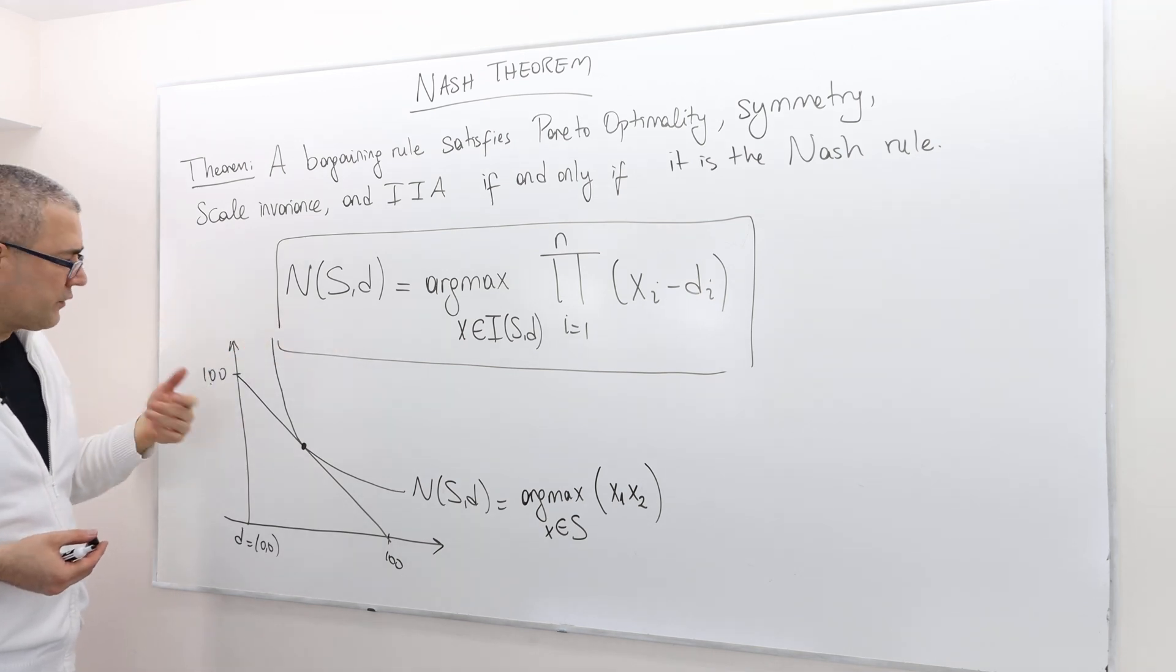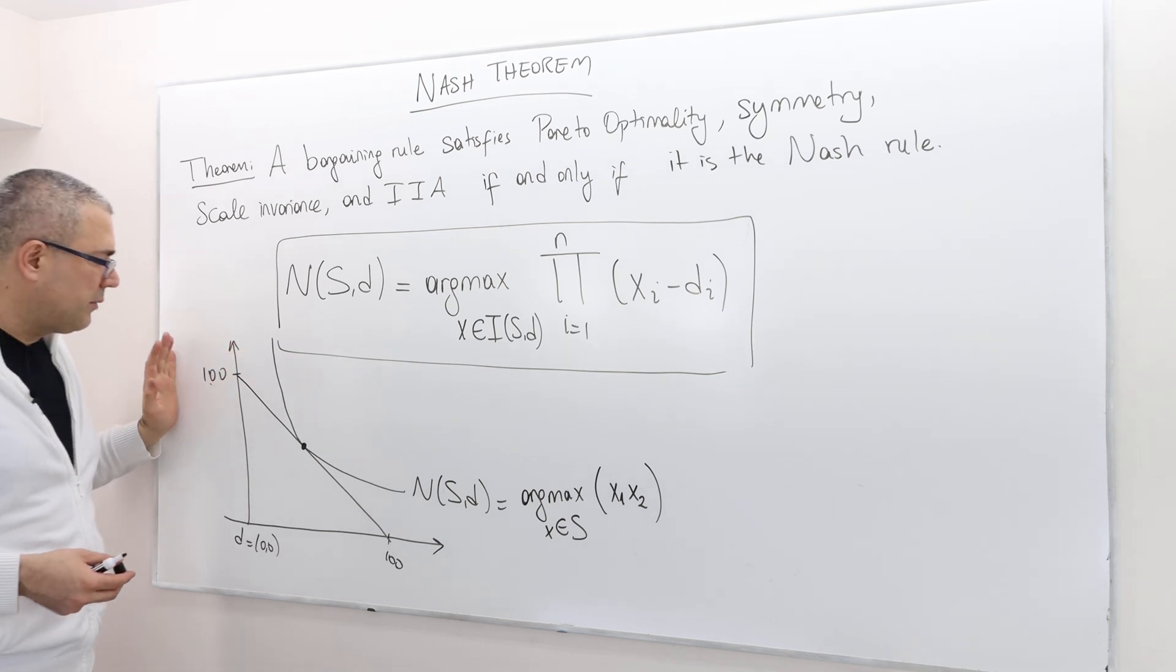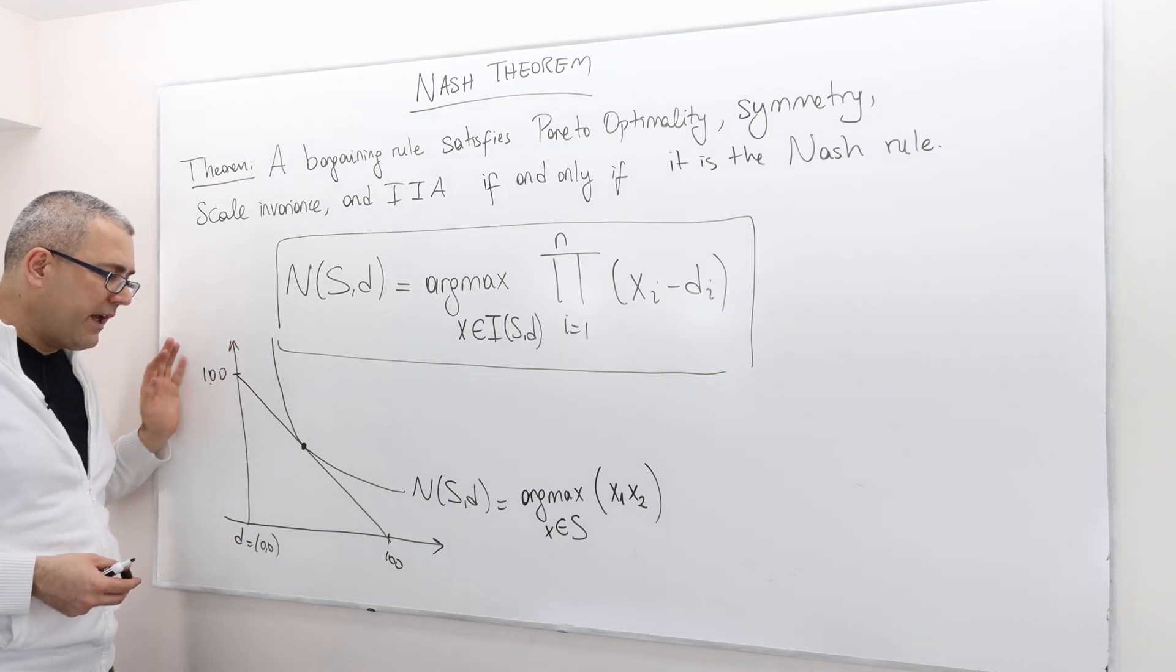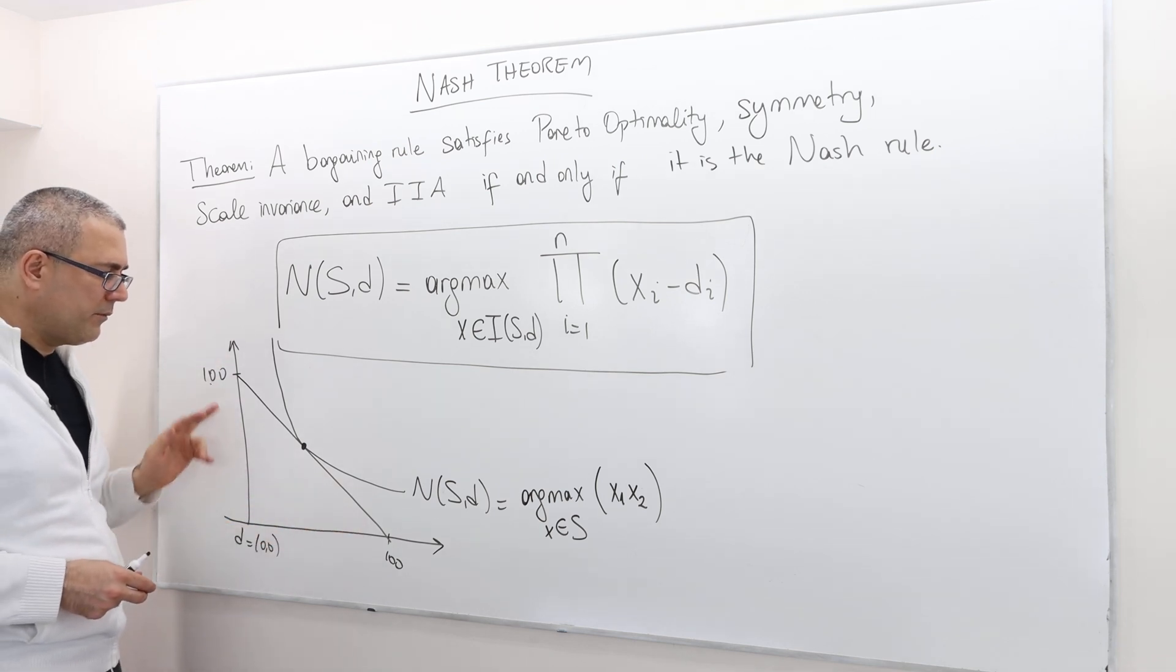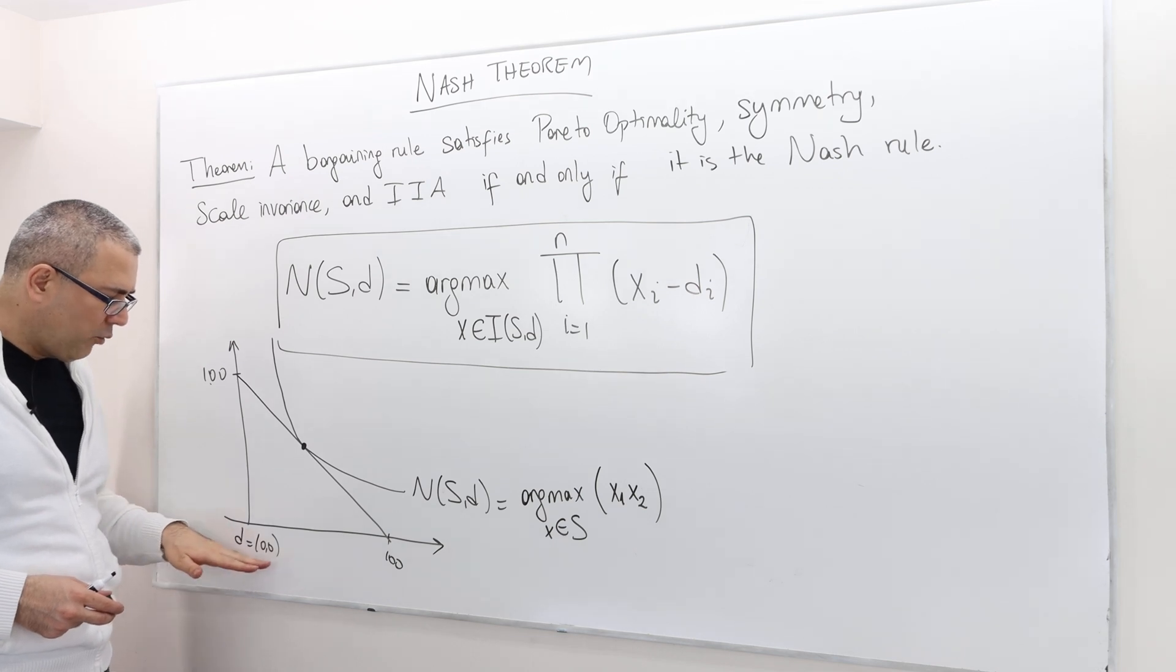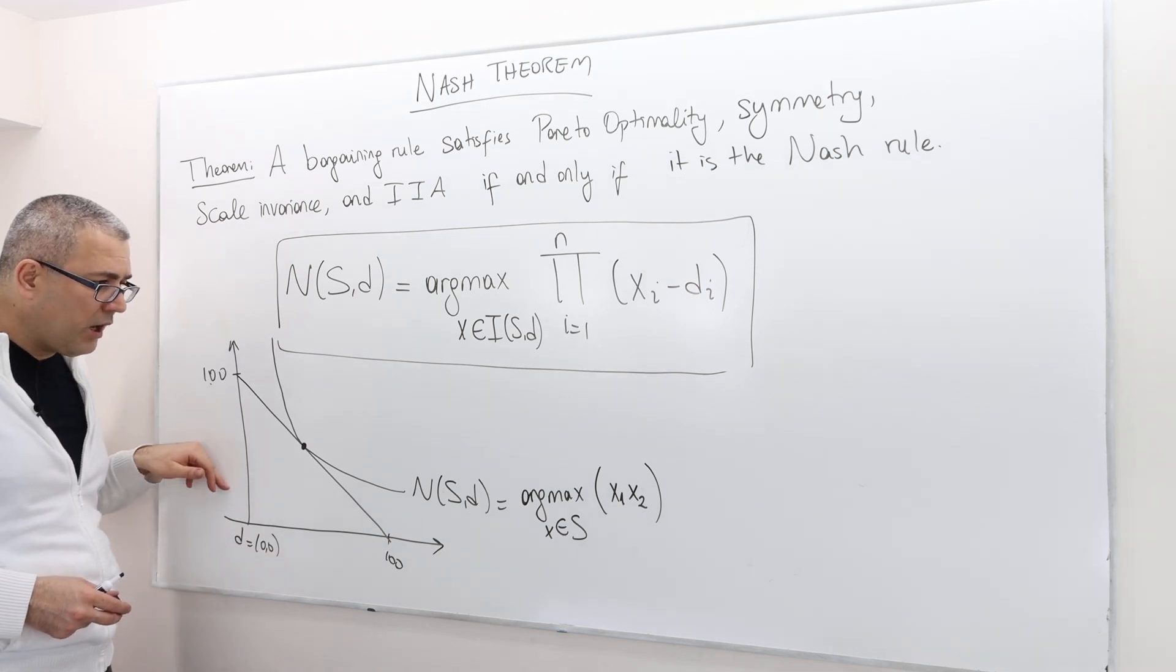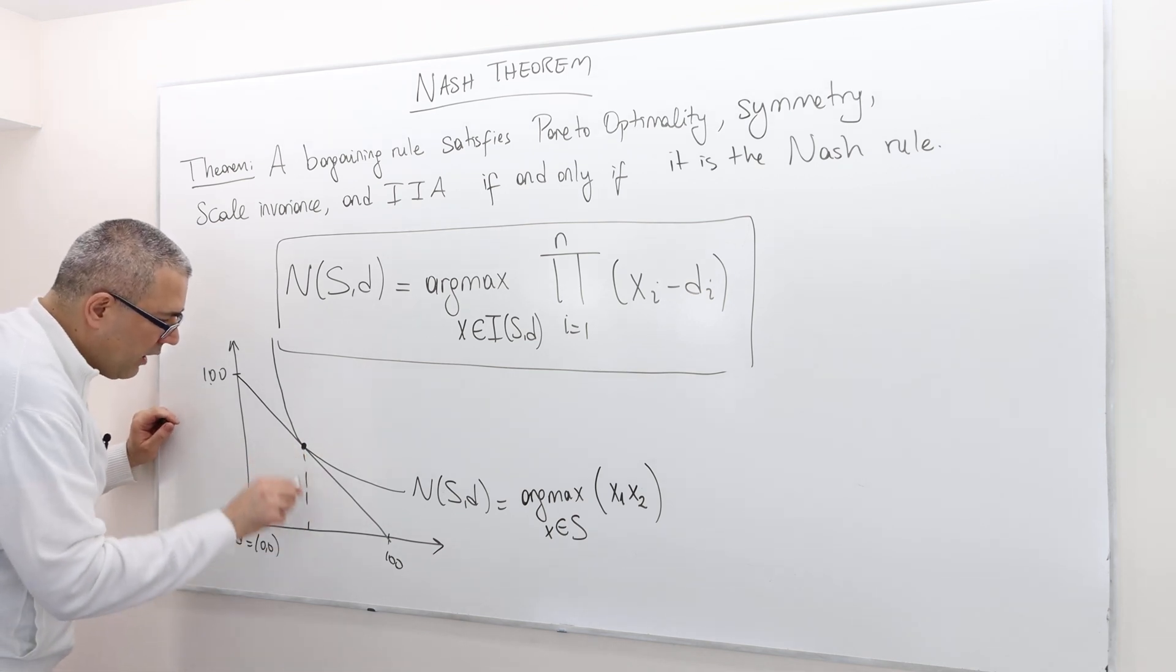So in order to visualize it, let's again go back to our buyer-seller problem. And if you remember, that was our set of feasible payoffs, and the disagreement point was 0, 0.